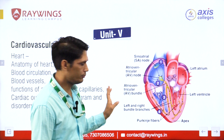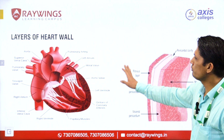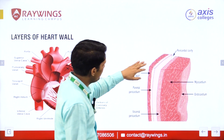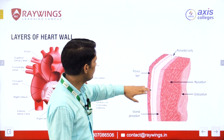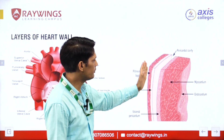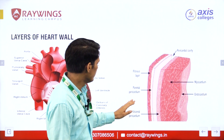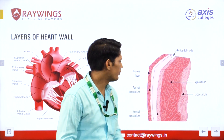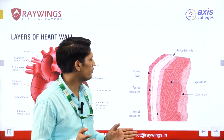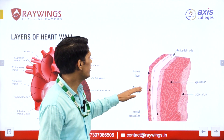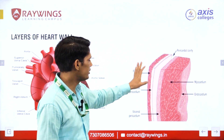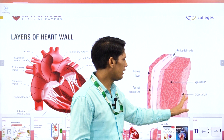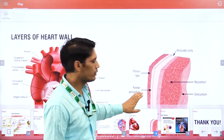The pericardium is the first layer of the heart and is divided into three parts: the fibrous layer, the parietal pericardium and the visceral pericardium. It contains the pericardial cavity, which holds approximately 30 ml of fluid that reduces friction between the layers of the heart. The middle layer is the myocardium and the innermost is the endocardium.